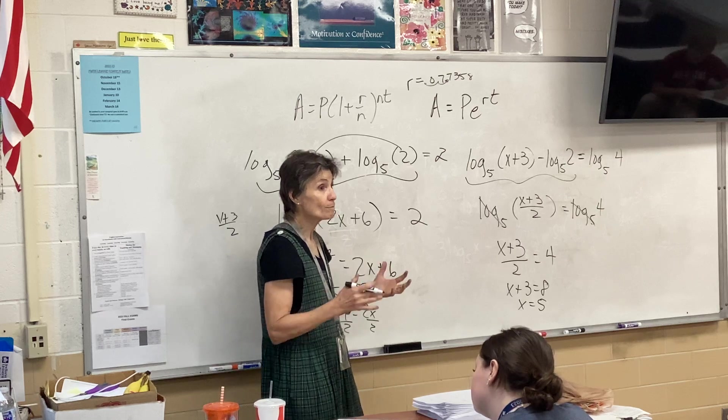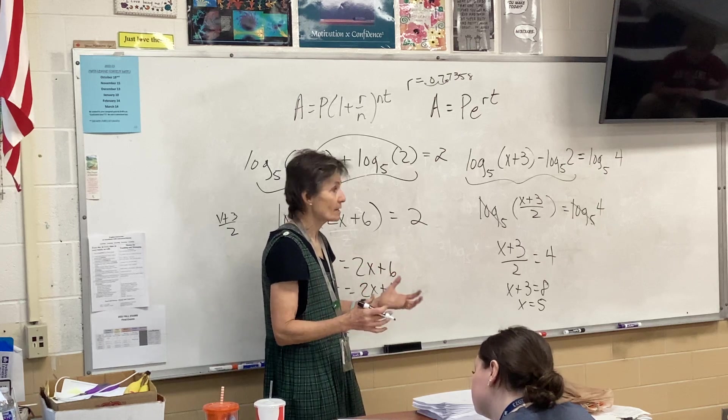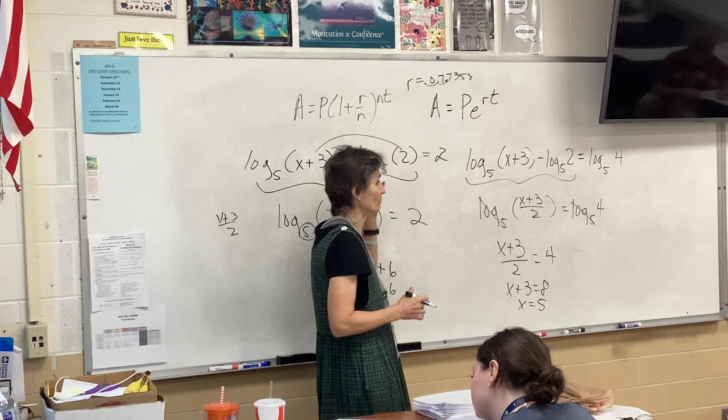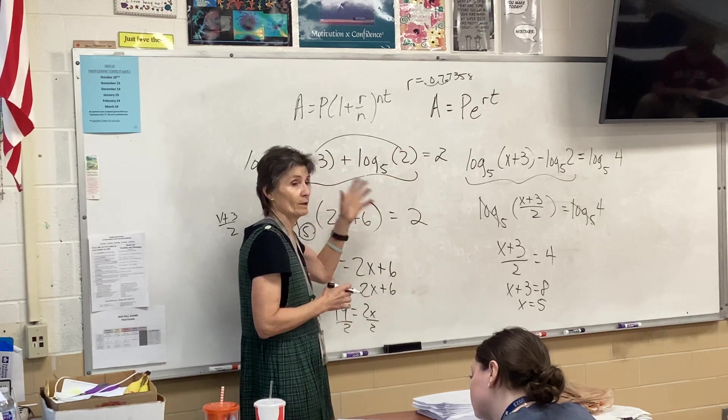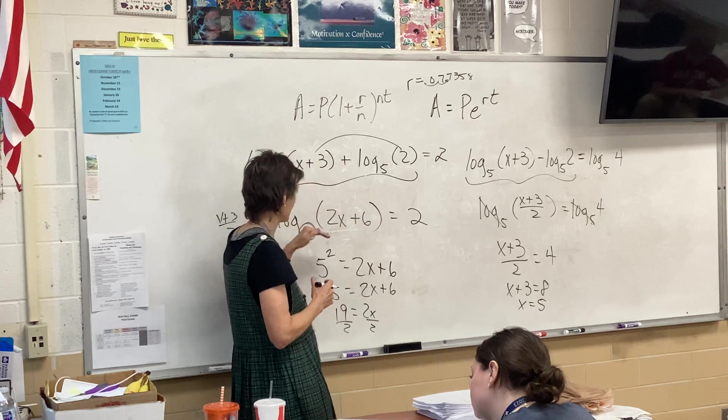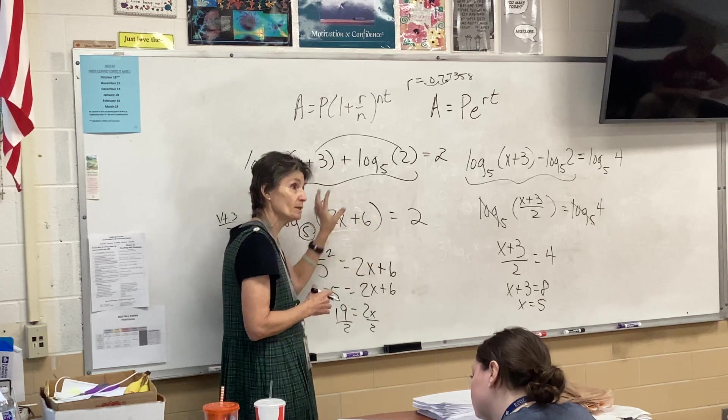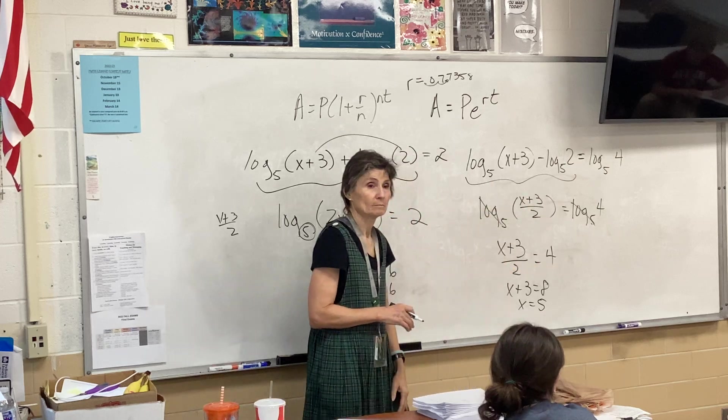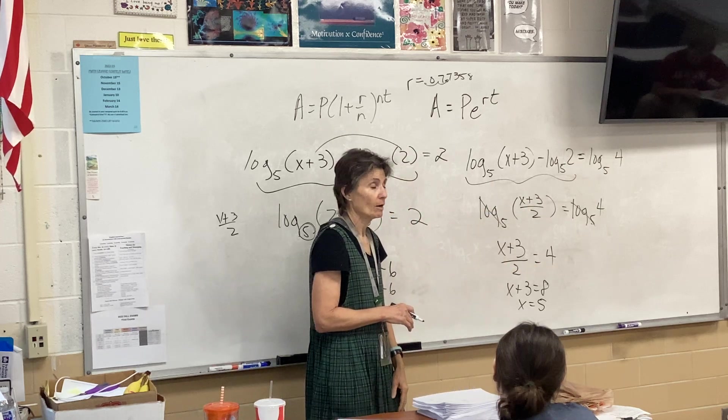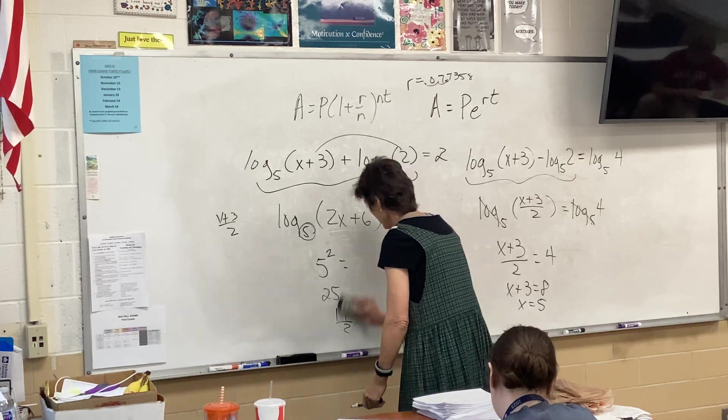So in terms of log equations, these are the only two kinds we've looked at. So you get one log on each side, no more than one log on each side. And then if it's log equals number, you loop-de-do. If it's log equals log, you drop. All right, good. So do you, what did you find over there?